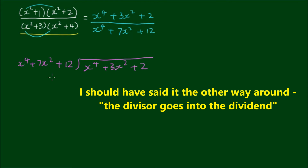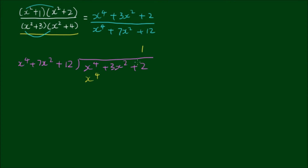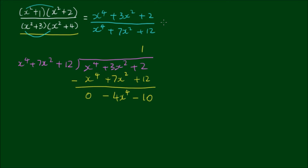Now if we perform long division on x⁴ + 3x² + 2 divided by x⁴ + 7x² + 12, the dividend goes into the divisor just once. Applying long division: 1 times (x⁴ + 7x² + 12), then subtracting gives x⁴ − x⁴ = 0, 3x² − 7x² = −4x², and 2 − 12 = −10. So the result is 1 with remainder −4x² − 10.